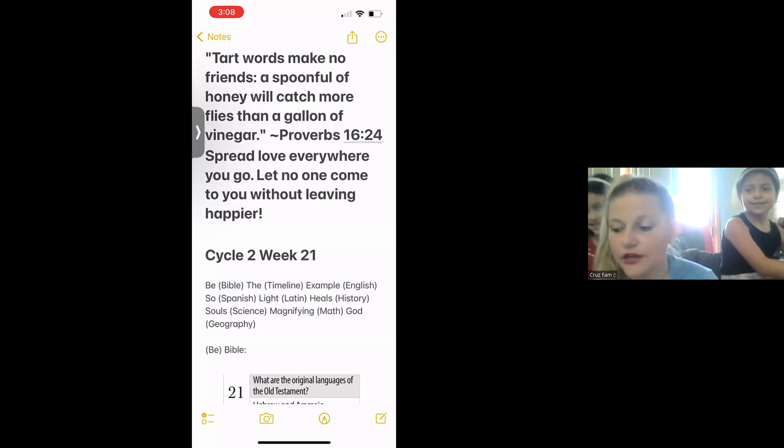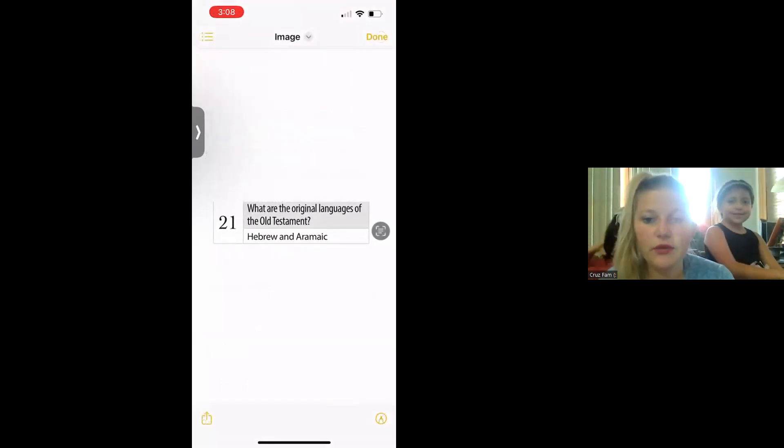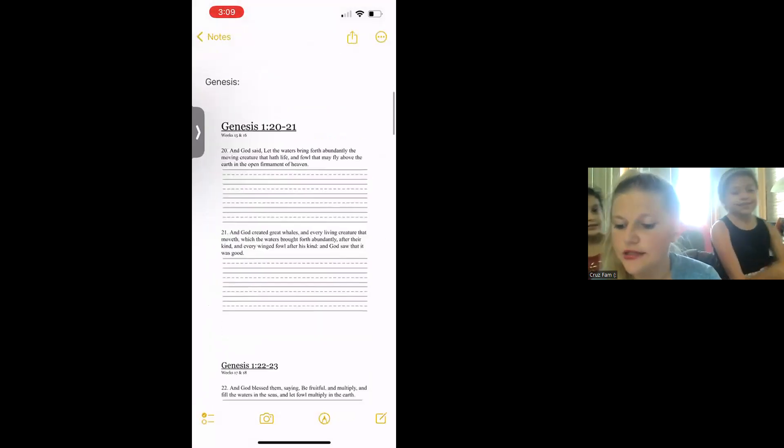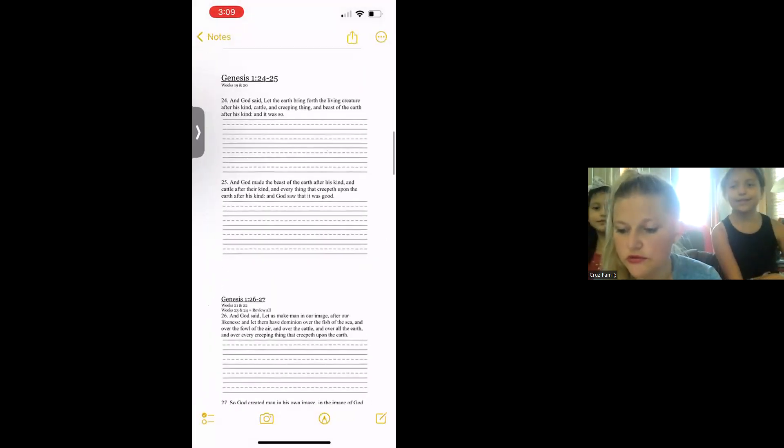Starting with B for Bible, to the tune of Very Superstitious: What are the original languages of the Old Testament? Hebrew and Aramaic. Hebrew and Aramaic. Genesis 1:24 through 27.